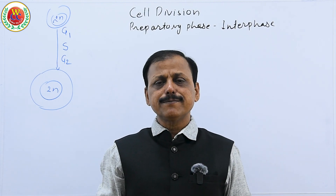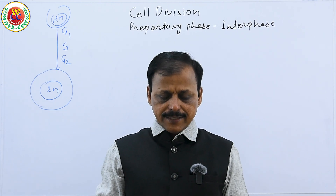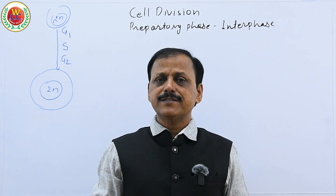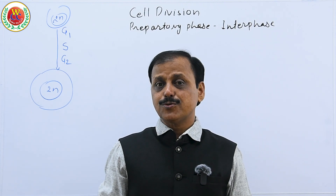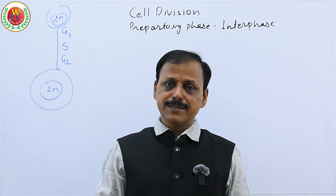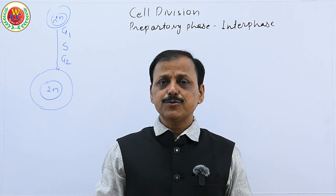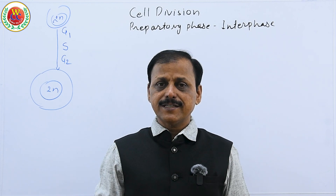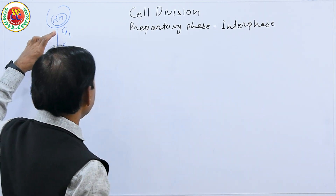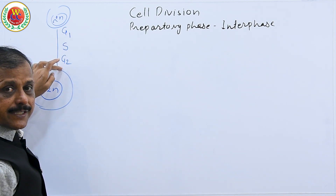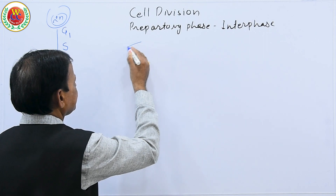The cell cycle is nothing but a series of stepwise events that lead to the duplication of genetic material, cytoplasmic content, and organelles, so that each set is represented in the newly produced daughter cells. This happens during G1 phase, S phase, and G2 phase — that is what we learn under the cell cycle.